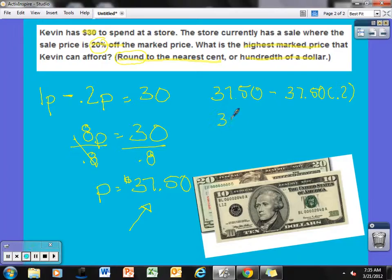So if I take this, that equals $37.50 minus, in my calculator, $37.50 times 2 tenths equals $7.50. If I subtract these two, that would give me $30, which is exactly what Rich Kevin has to spend.